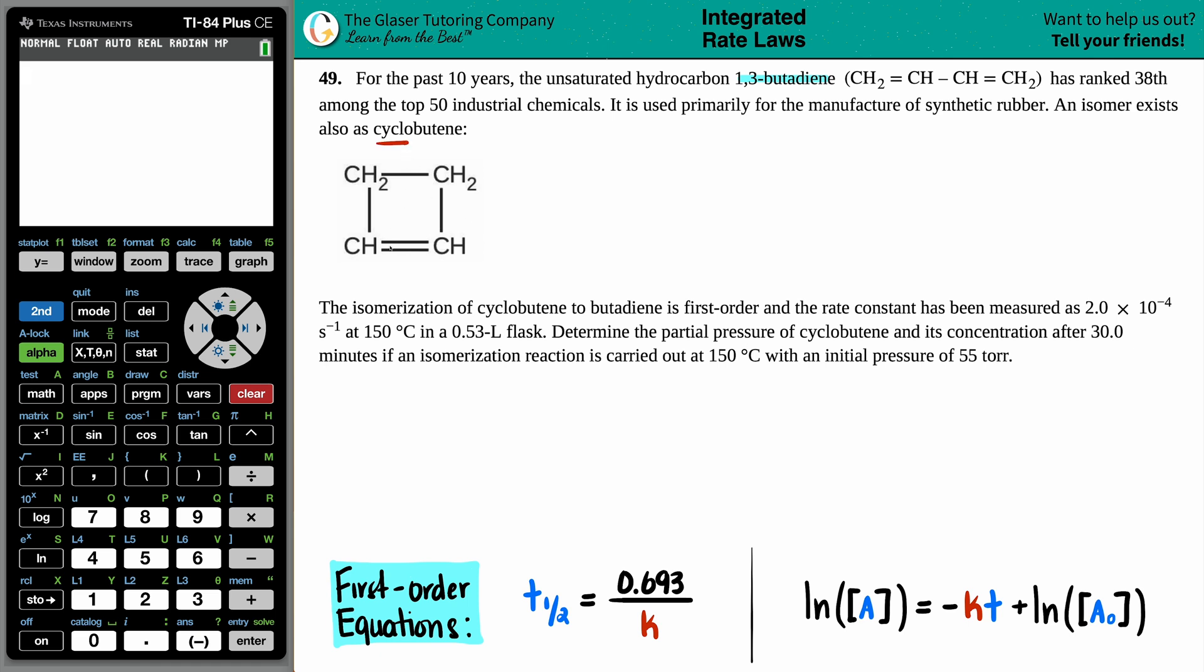Cyclo means that your carbons are in a ring fashion. And if you have four carbons, it will turn out to be a square. Let's keep going. The isomerization of cyclobutene to butadiene is first order and the rate constant has been measured as 2.0 times 10 to the negative fourth per second at 150 degrees Celsius in a 0.53 liter flask. Determine the partial pressure of cyclobutene and its concentration after 30 minutes if an isomerization reaction is carried out at 150 degrees Celsius with an initial pressure of 50 torr. Okay, a lot of stuff being thrown at us, right?